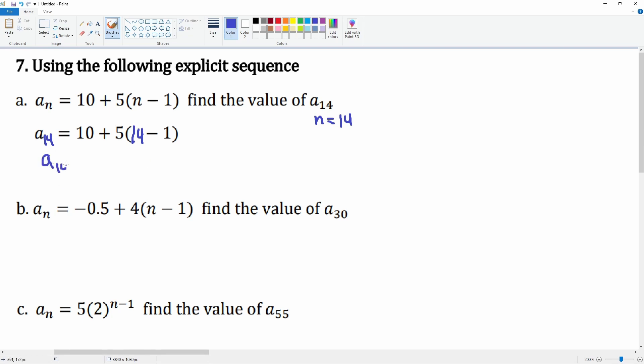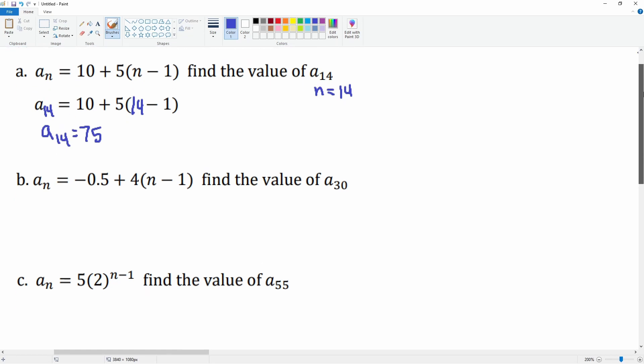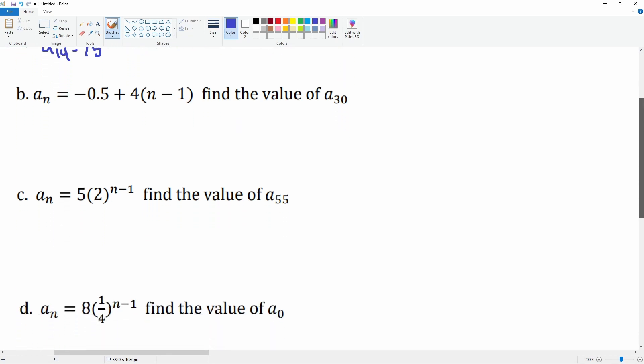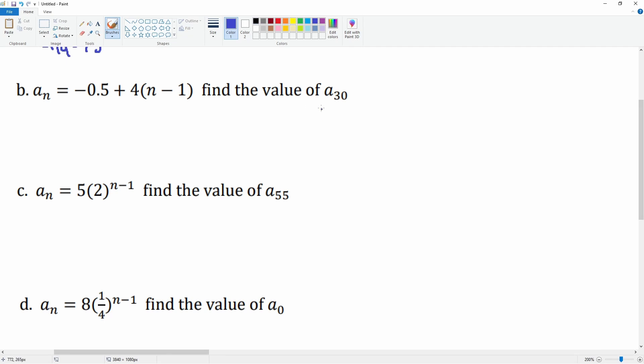If we know it, we can plug in and get any value that we want. We want a₃₀, this is n of 30. So we grab our formula that we have and now all I have to do is substitute the n for the value of 30. And that will get you my answer: negative 0.5 plus 4 parentheses 30 minus 1. This gets me a value of a₃₀ equals 115.5.